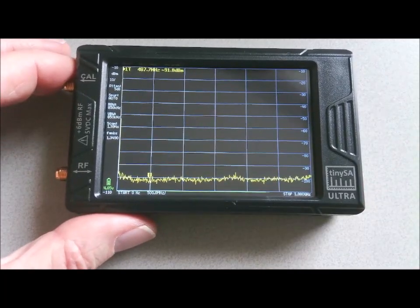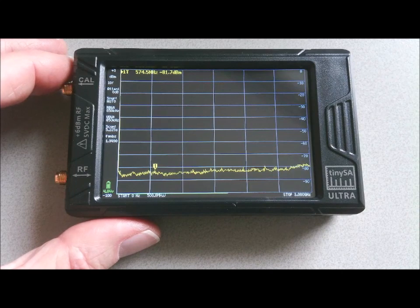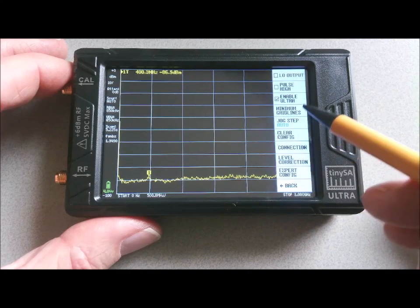And immediately the scan range changes. And now the TinySA scans up to 3 GHz. So from 0 to 3 GHz. But it can go even higher.